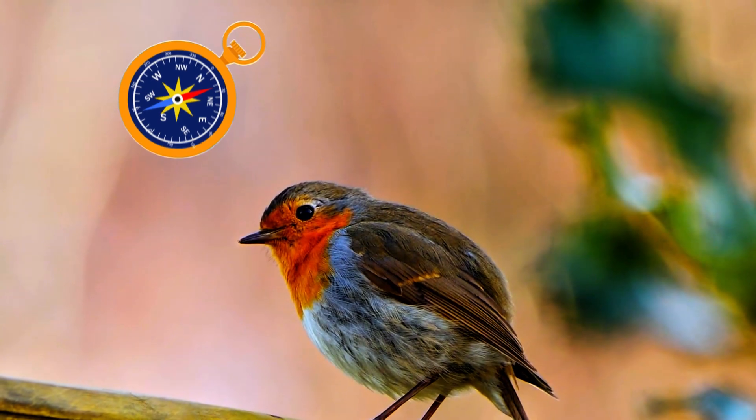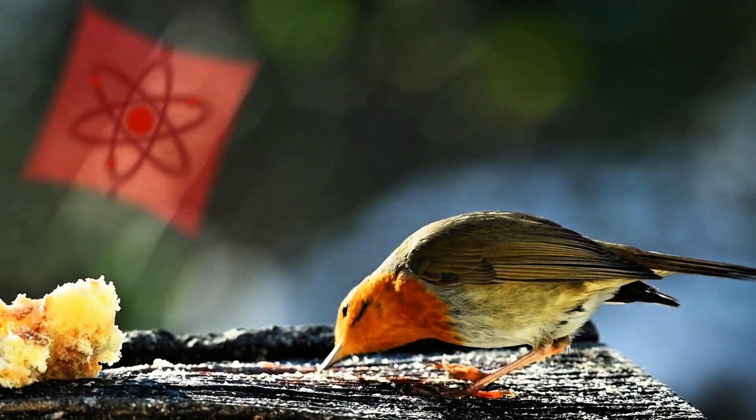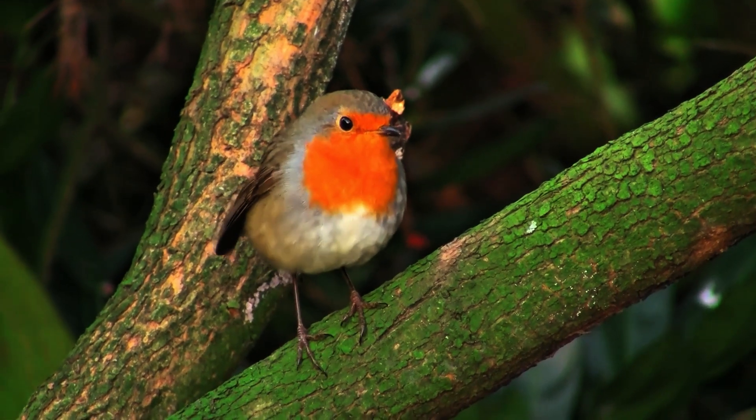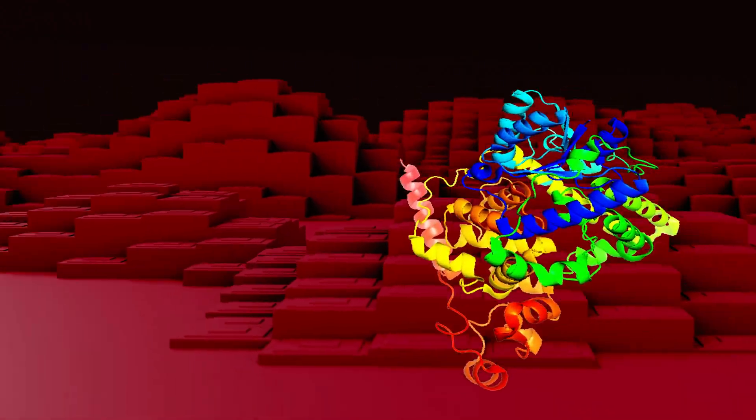Our first subject, European robins, use a quantum compass for navigation during their migration. A key protein in their eyes, known as Cryptochrome 4, is sensitive to magnetic fields.